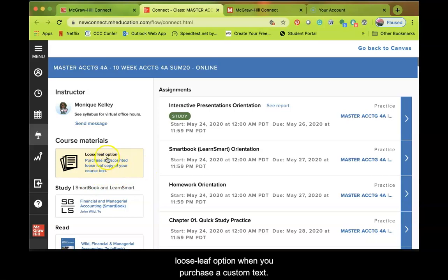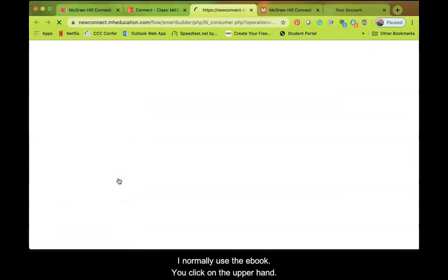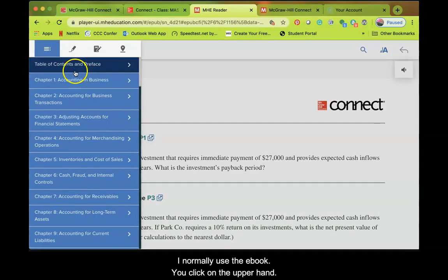And you'll notice on the far left-hand side it says Loose Leaf option. When you purchase the text custom text, that is what's going to be coming from the Fresno City Bookstore. The second option says the SBLS. This is your SmartBook option. And if you go down a little bit further, here's your eBook. So eBook and SmartBook are two separate items. You can use either one.